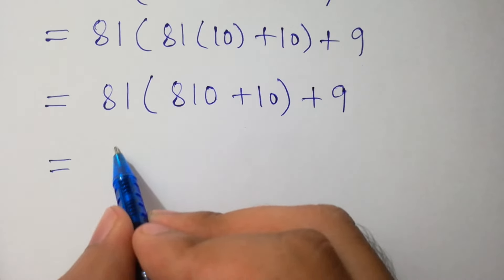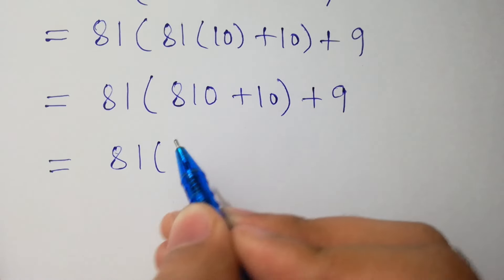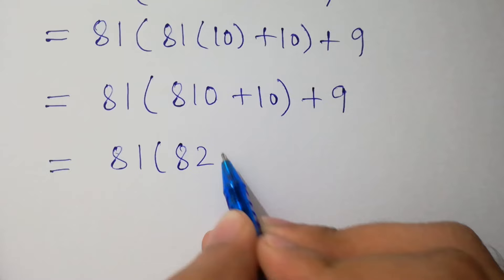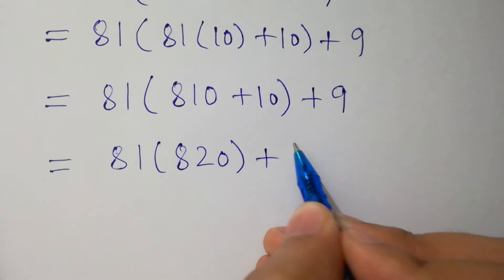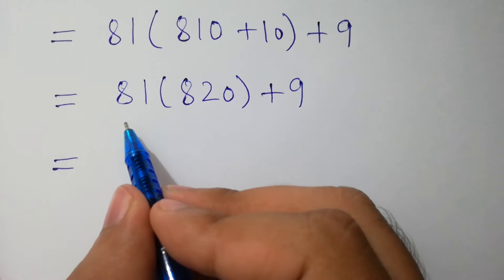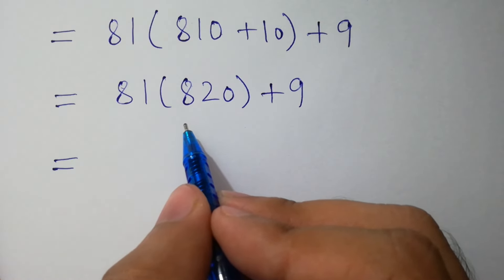Next step is very simple. 81 as it is, 810 plus 10 equals 820, plus 9. And here, 81 times 820 equals...